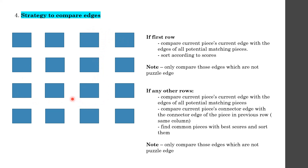For any row beyond row 1, two comparisons are needed. For example, to find row 2, piece 2, we must find potential matches relative to row 2, piece 1 and also relative to row 1, piece 2, since piece 2 in row 2 connects to both. The piece satisfying both conditions with the best combined score is chosen, and again we only compare non-puzzle-boundary edges.